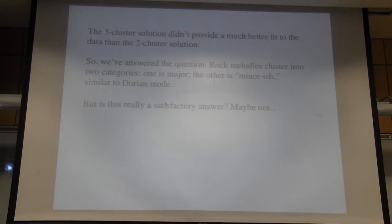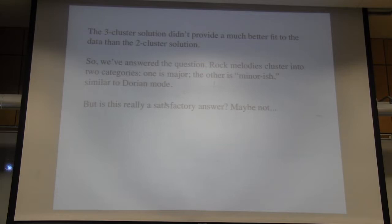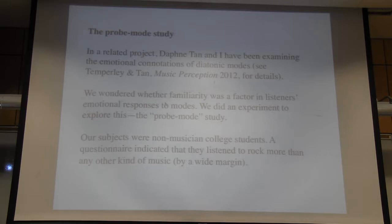One interesting detail: the flat six degree is quite rare in both clusters. We also looked at higher cluster solutions, but they didn't fit the data much better than the two-cluster solution. So you could say we've answered the question — rock melody clusters into two categories: one is major, the other is sort of minor-ish, similar to Dorian mode with some blues influence. But is this really a satisfactory answer? Maybe not.